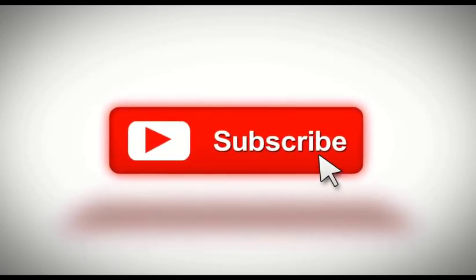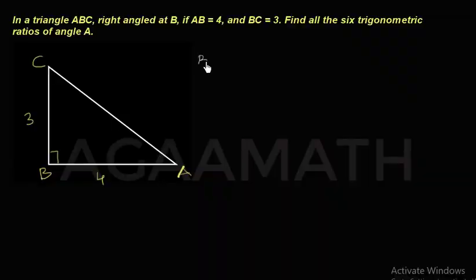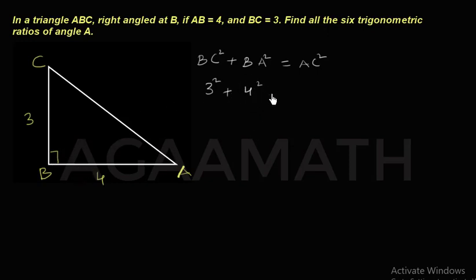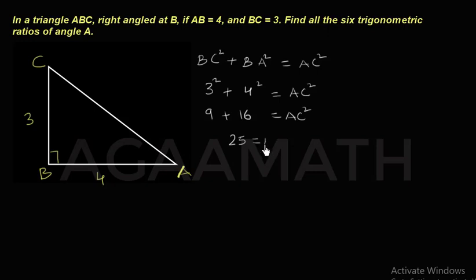So BC squared plus BA squared equals AC squared. BC squared is 3 squared, and BA squared is 4 squared, equals AC squared. So 3 squared is 9 and 4 squared is 16, equals AC squared. So 9 plus 16 is 25, which equals AC squared.